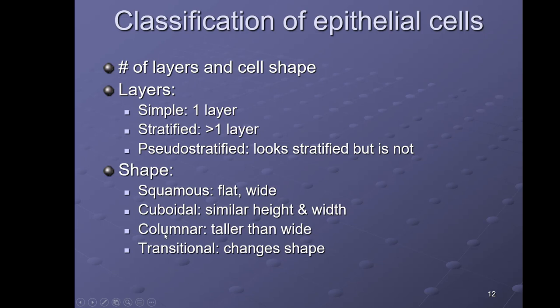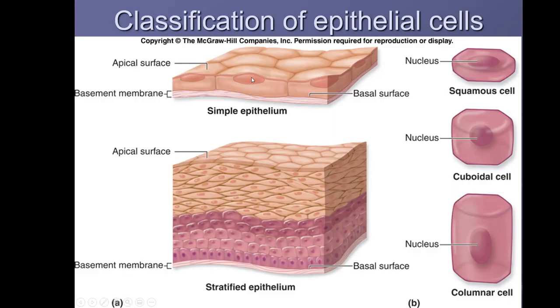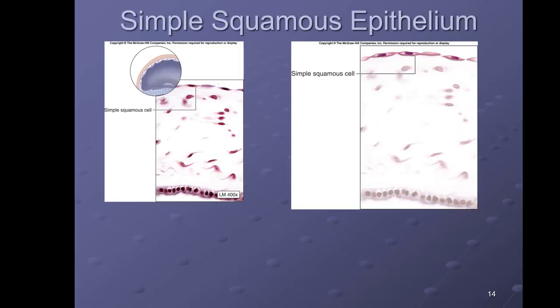Regarding shape: if the cells are flat or wide they are called squamous; if they look like little cubes they are called cuboidal; if they look tall like a column they are called columnar. There is also one example where the shape can change, called transitional, seen in the urinary bladder. So for example, one layer of flat cells would be simple squamous, and multiple layers with flat outermost cells would be stratified squamous.